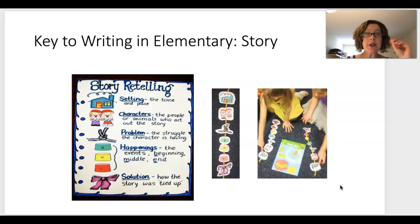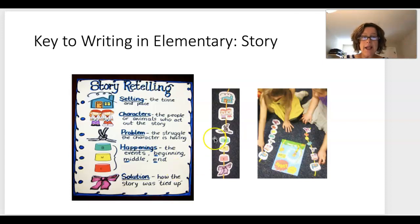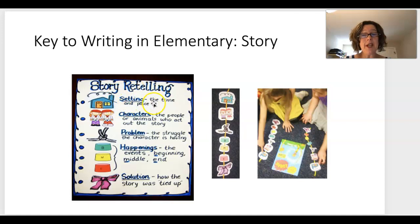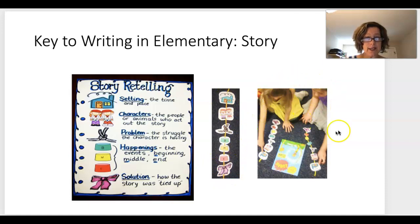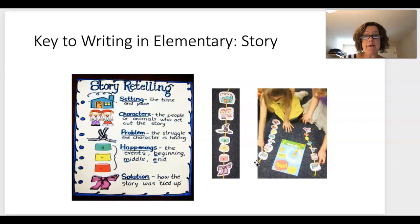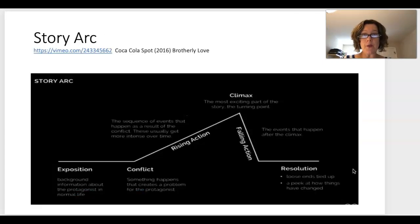Elementary kids are asked to write a lot of stories, so you have to know the elements of a story in order to teach children how to write one. Especially for early grades like grade one and two, the key elements are: setting (time and place), characters, problem, events (beginning, middle, end), and some kind of solution. Teachers actually have this laminated on a string as a visual reminder for kids when reading or starting to write.